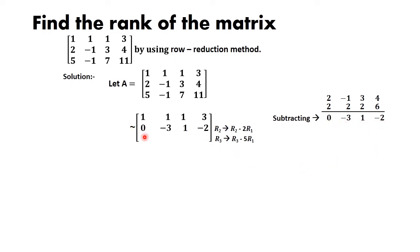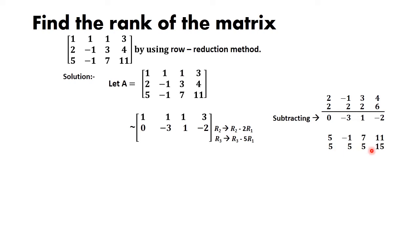Similarly, using the operation R3 = R3 - 5R1: write R3 elements [5, -1, 7, 11], then multiply R1 elements by 5 to get [5, 5, 5, 15]. Subtracting those two gives [0, -6, 2, -4]. So R3 becomes [0, -6, 2, -4].